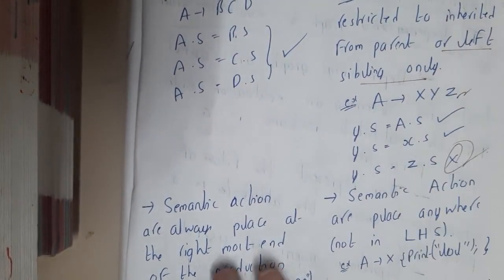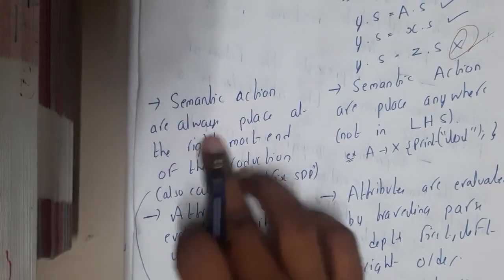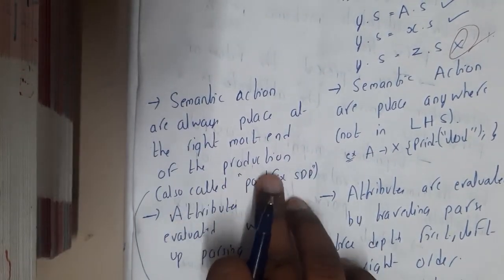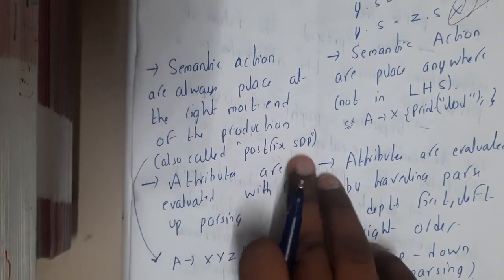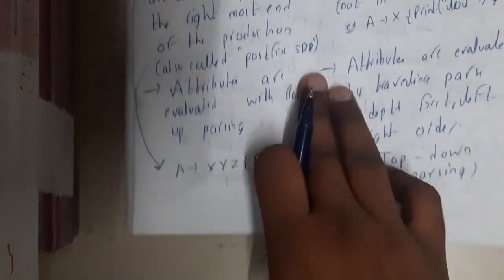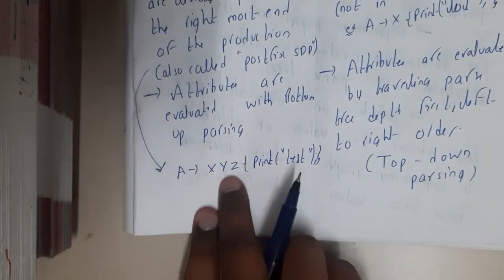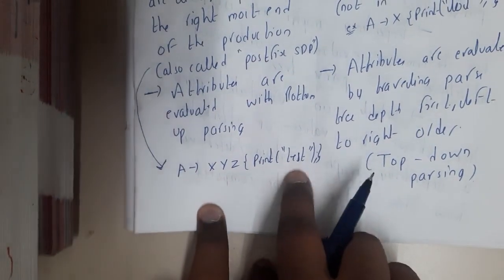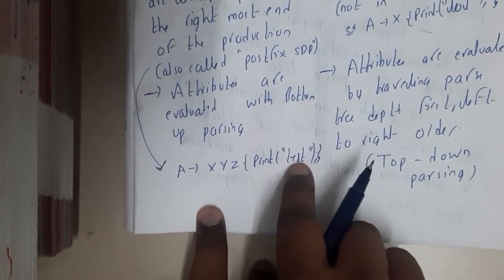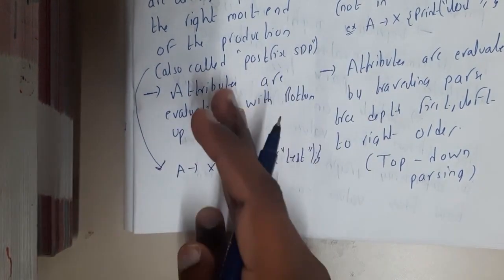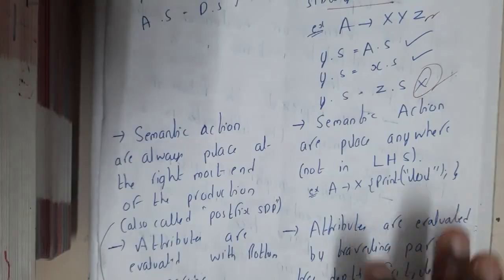Semantic actions are always placed at the rightmost end of the production, also called a postfix SDD. So basically, if there is a production A implies XYZ print test, this print test can be placed only at the rightmost end. It cannot be placed in between X and Y, whereas in